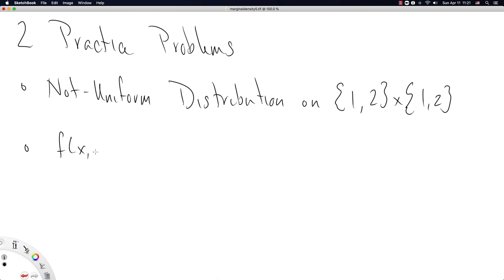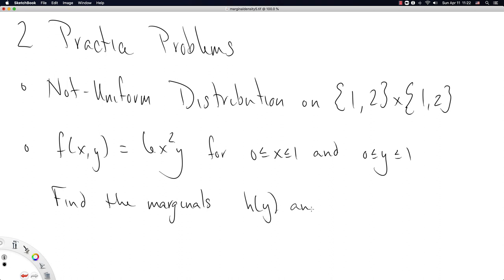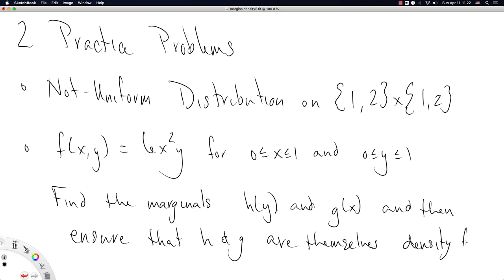Further, you could take the continuous joint density function that we looked at as a practice problem from the last video. I'll write it out again. You could take this one, f(x,y) = xy^2 for 0 ≤ x ≤ 1 and 0 ≤ y ≤ 1, and for either of these, find the marginals h of y and g of x, and then ensure, that is prove, that h and g are themselves density functions.